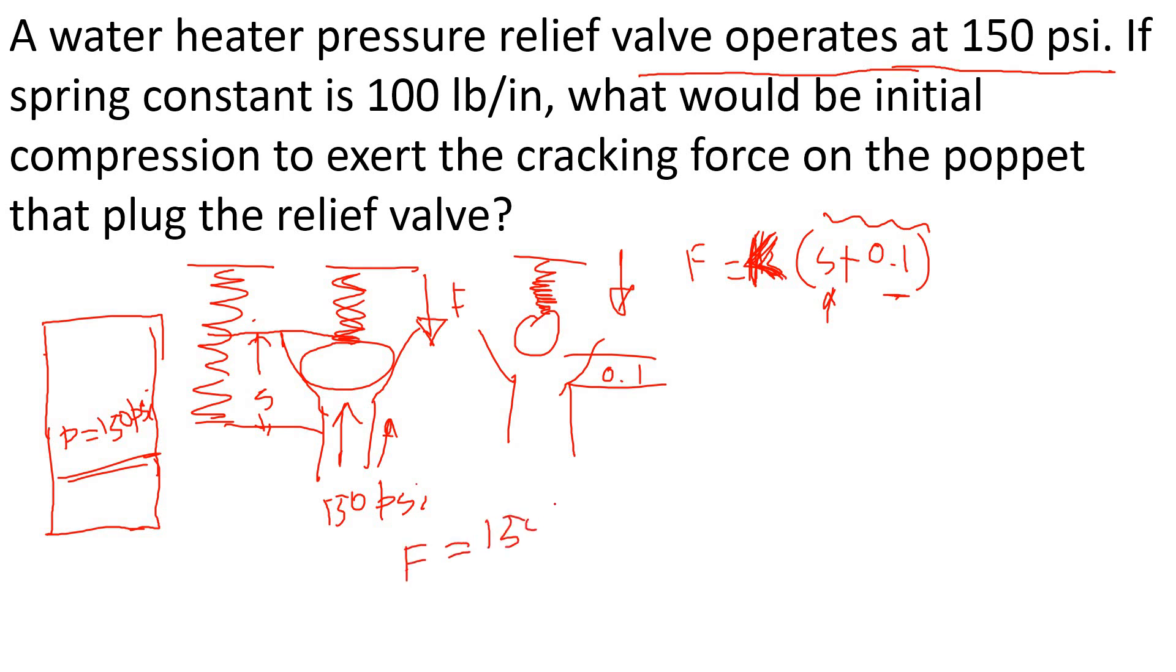Now the force we can calculate using the same thing we did before. So this psi times the area of this pipe, which was calculated 0.196 inches square, so that was 29.4 pounds.